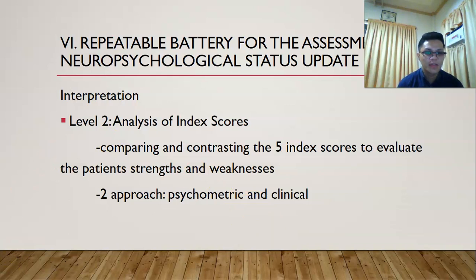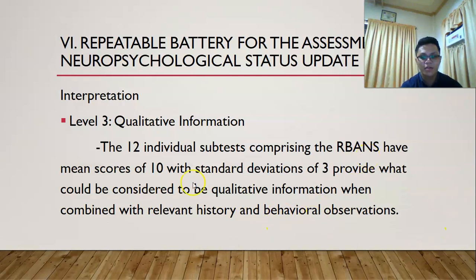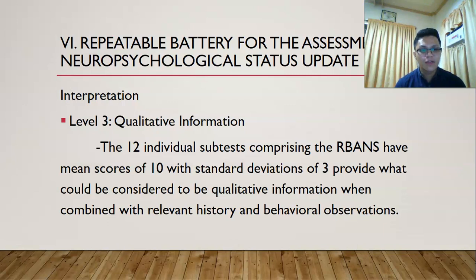This means that aside from the psychometric results of RBANS test scores, the clinician must also check the family history, medical history, psychiatric history, family patterns of illnesses, and other presenting problems and behavioral observations. For Level 3 interpretation, qualitative information from the 12 individual subtests has mean scores of 10 with standard deviations of 3, which can be considered qualitative information when combined with relevant history and behavioral observations. The recommended good practice is to correlate RBANS test results with other tests that measure the same domain, and to integrate the psychometric approach with the clinical qualitative approach.